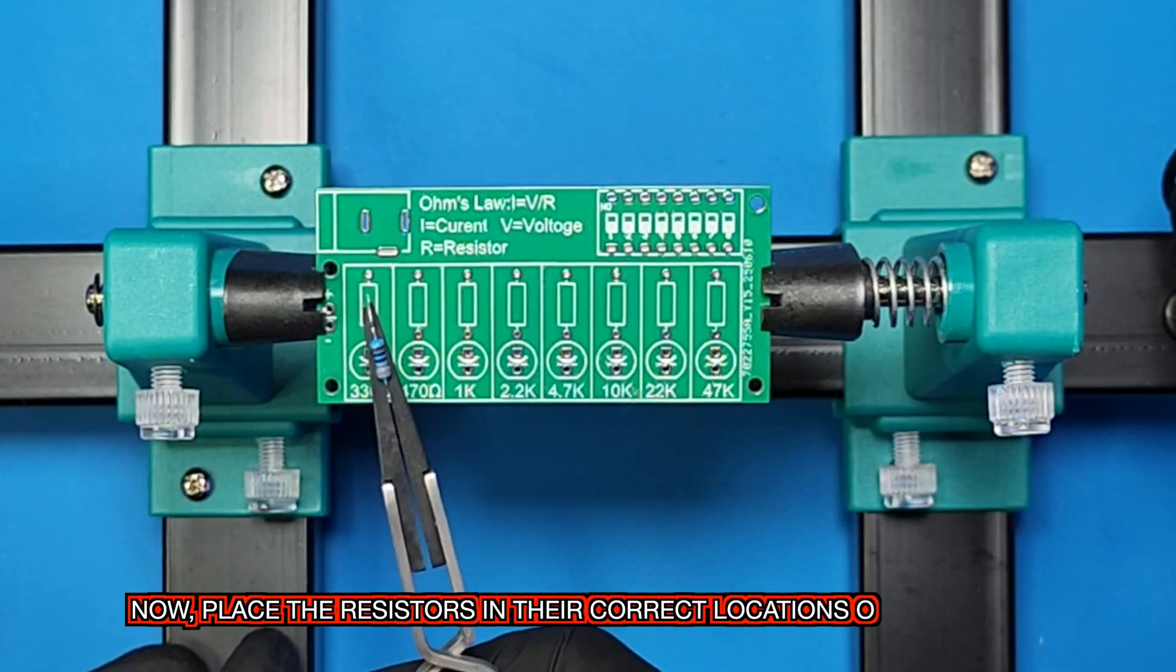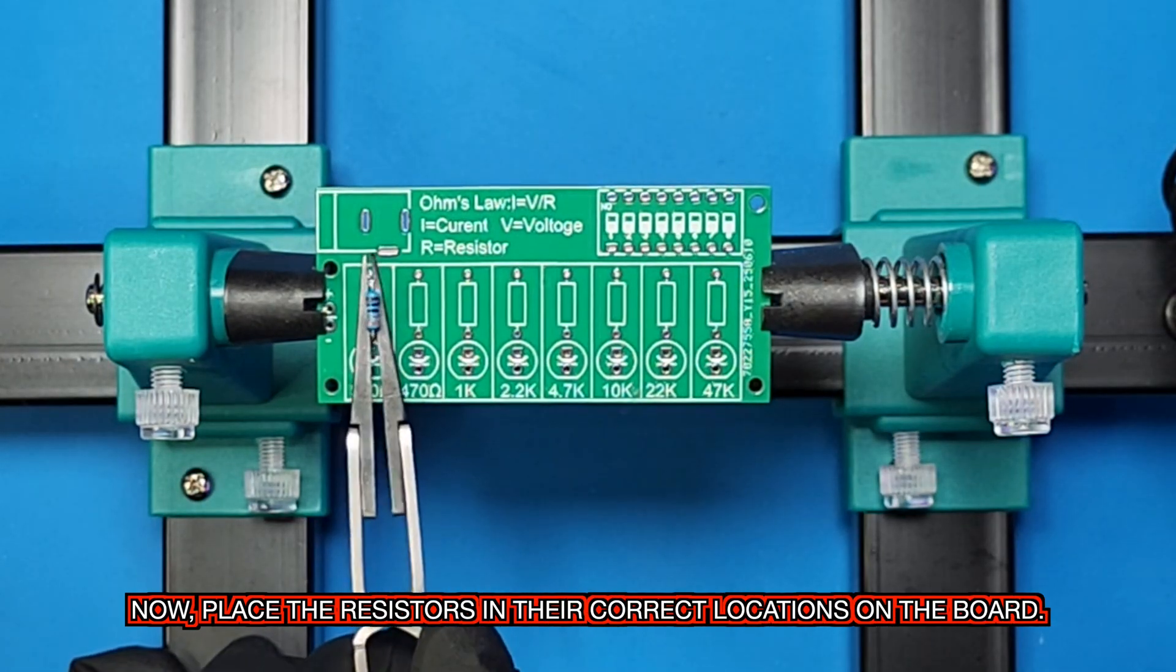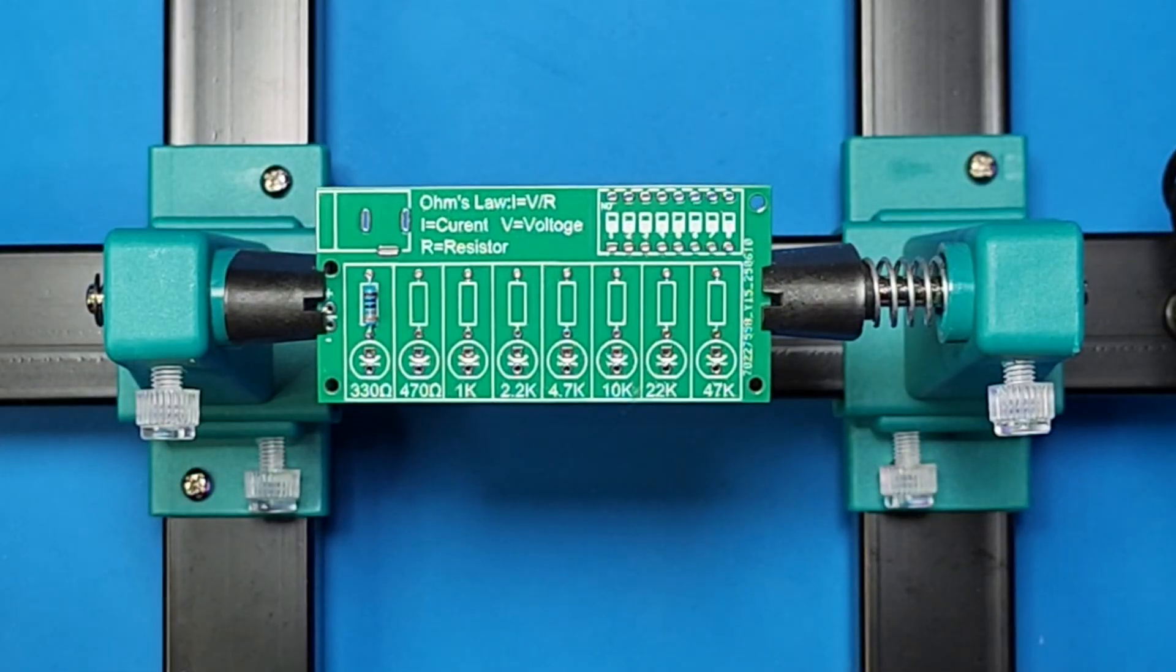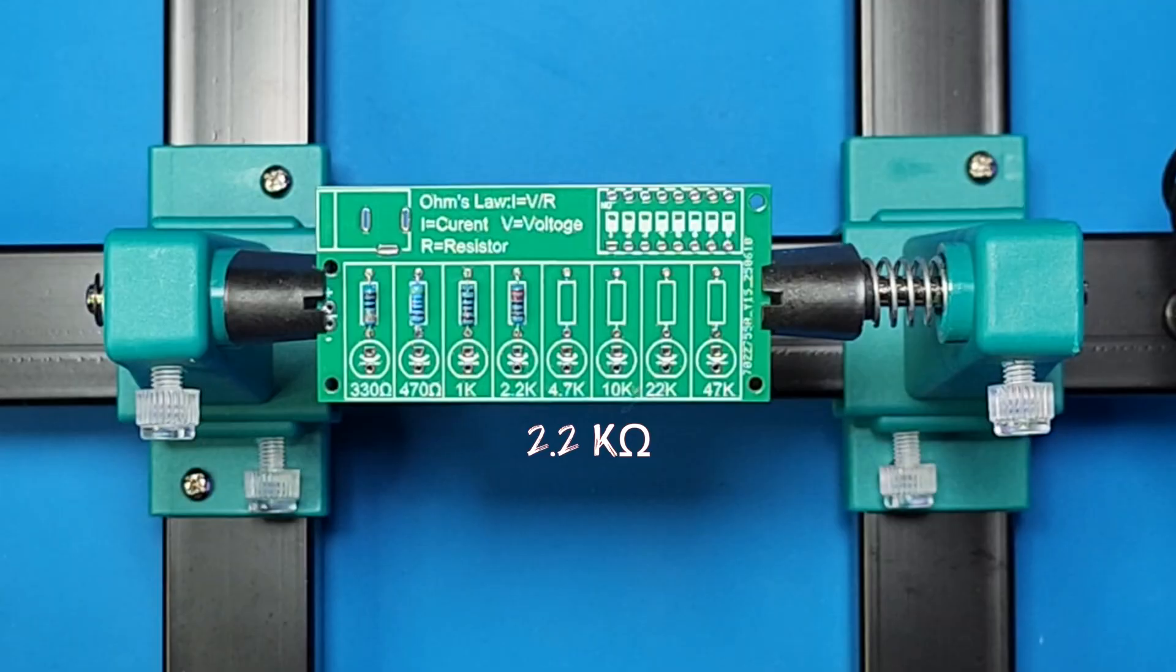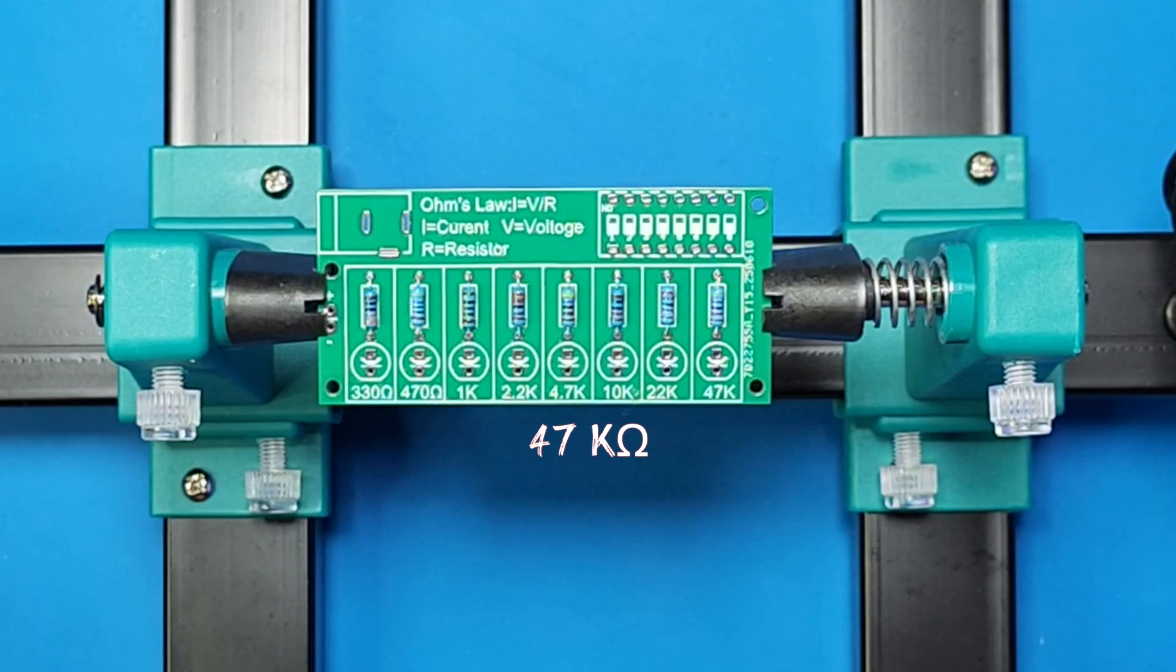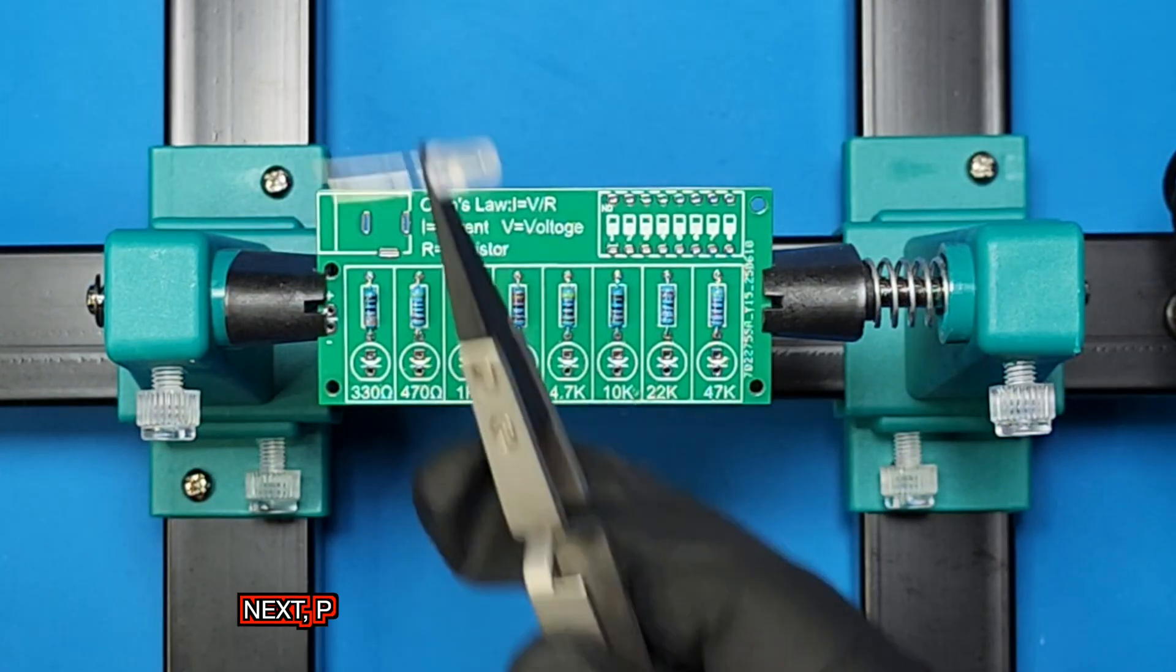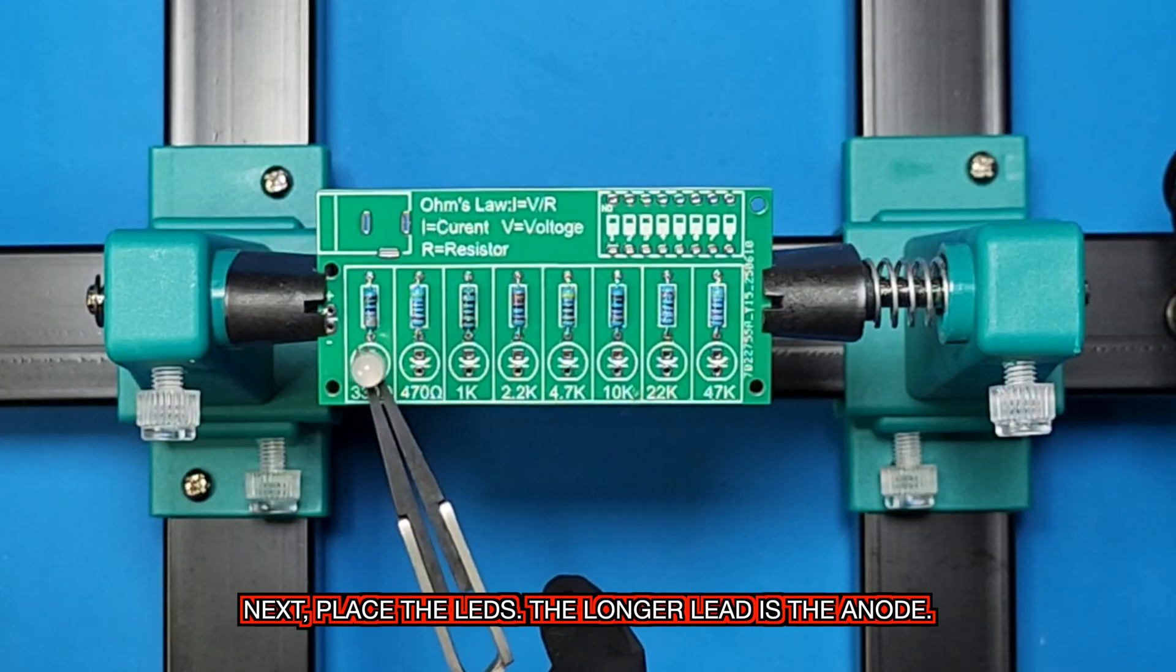Now, place the resistors in their correct locations on the board. Next, place the LEDs. The longer lead is the anode.